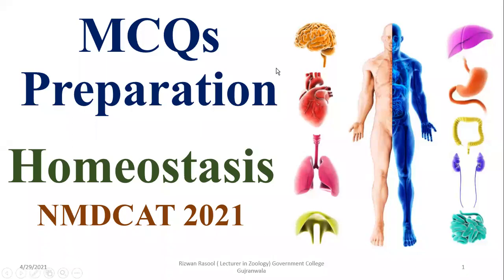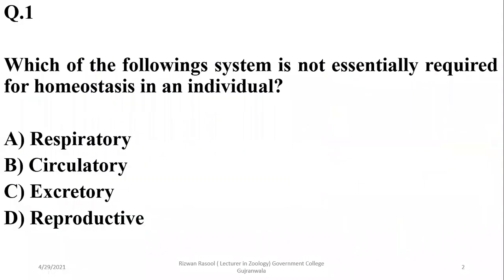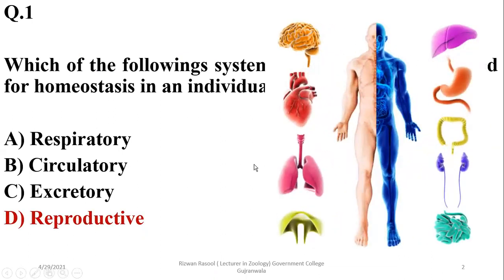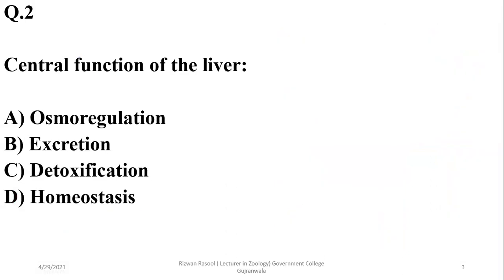The topic for discussion of MCQs is homeostasis. Question number one: which of the following system is not essentially required for homeostasis in an individual? All systems of our body are basically homeostatic in function, but the reproductive system is required for maintenance of a species, not for the survival of an individual. So delta is the right option.